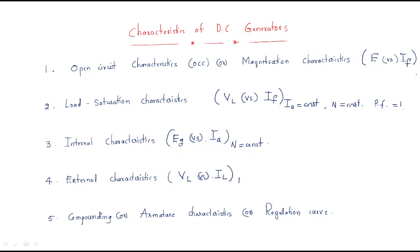Generally, generated EMF and armature current are both generated in the internal part of the generator — they are internally available. But load voltage and load current are both outside the generator, which is why we call them the external characteristics.